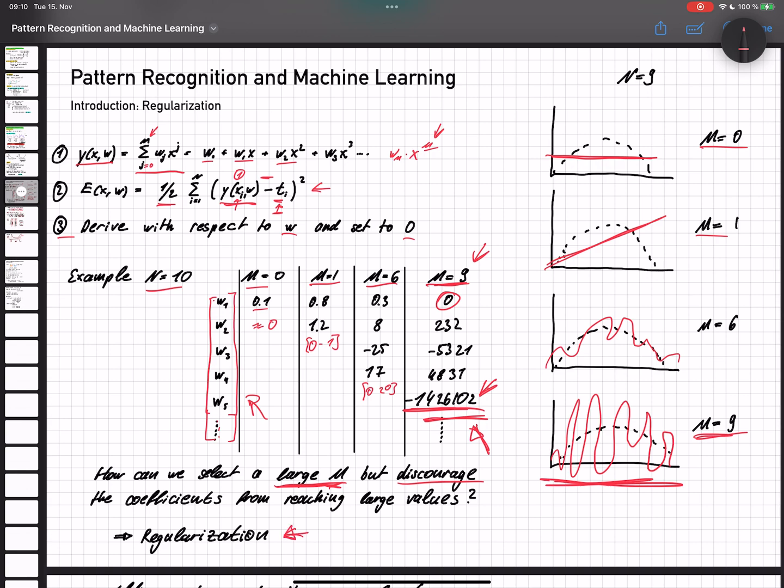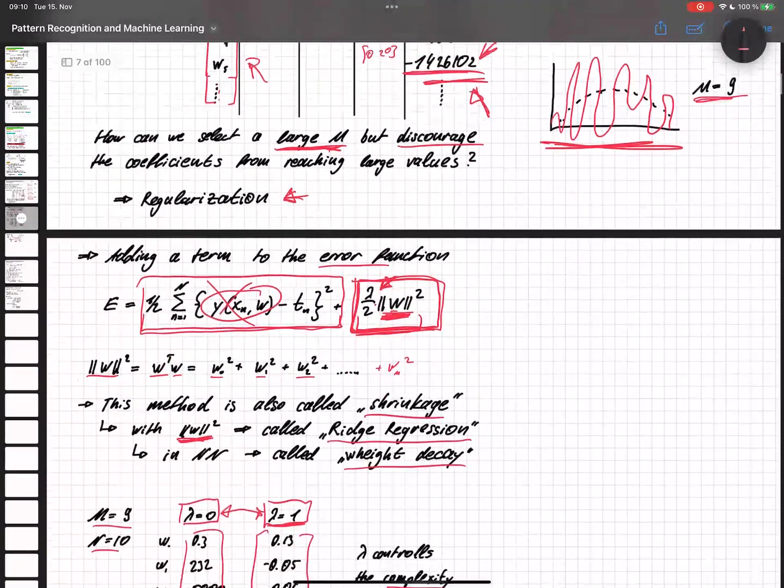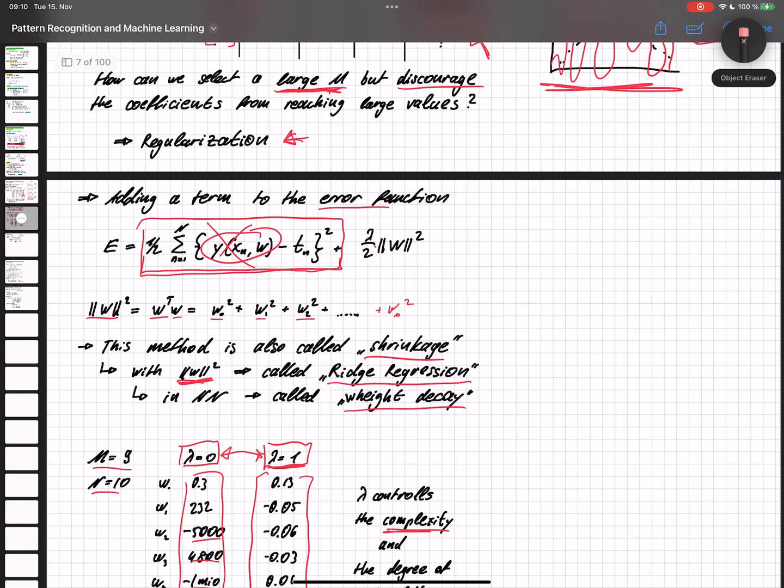To solve this, we use regularization. And we're doing that by simply adding a term that is considering the values of our parameters w that we're trying to choose. If we choose this specific addition to the term, it's called ridge regression.